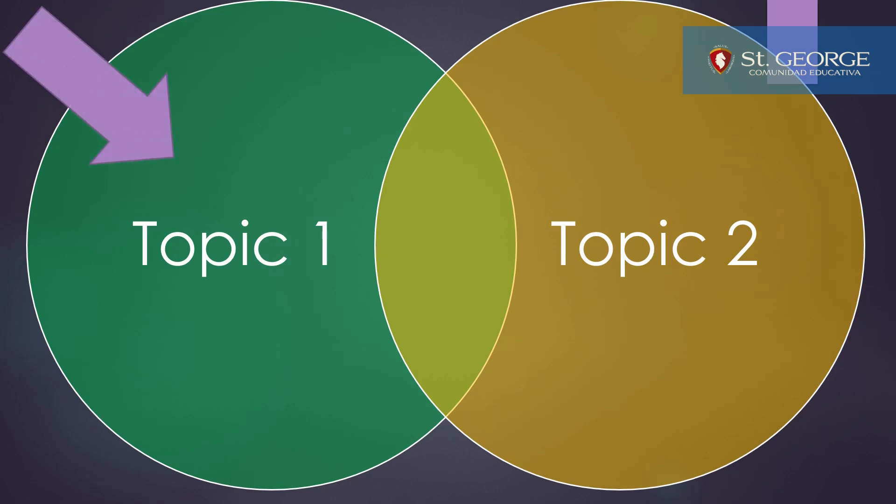So in one of the circles, you have to write down the name of one of the concepts. In the other, you write the other name. In each circle, you have to list the characteristics of each topic.